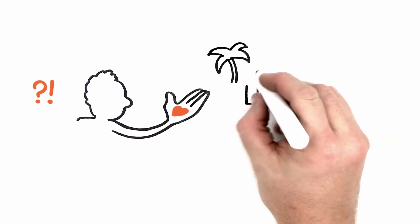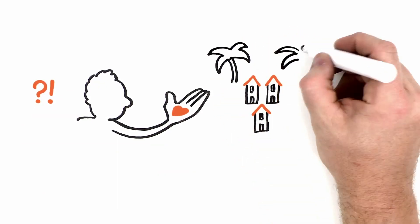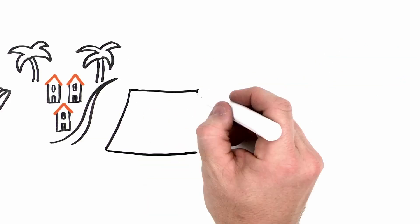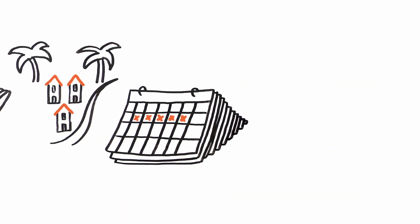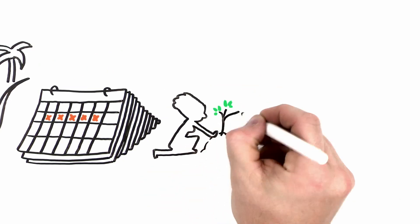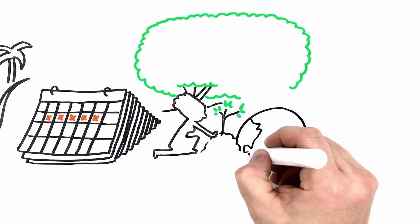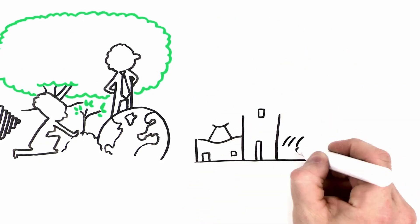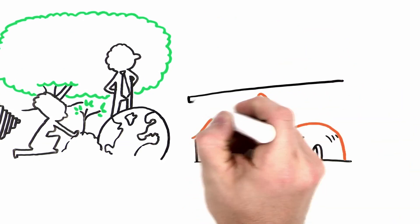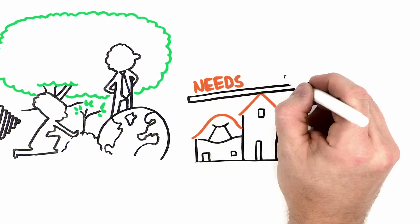Some people volunteer further and get involved in development or environmental action for a day, for a week, for a year. Their work, big or small, might sometimes go unnoticed to global leaders, but their actions count in their communities, where they know the right balance between needs and limits.